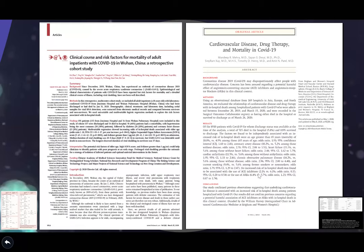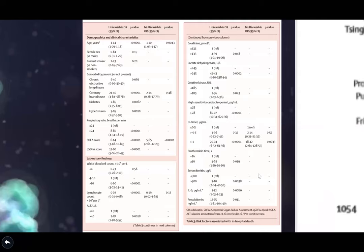Two major studies look at factors associated with COVID-19 mortality. The first, from a Chinese group published in Lancet, found that age, female sex (women had lower death rates than men), smoking, and comorbidities like chronic obstructive lung disease and coronary heart disease were significantly related to mortality.